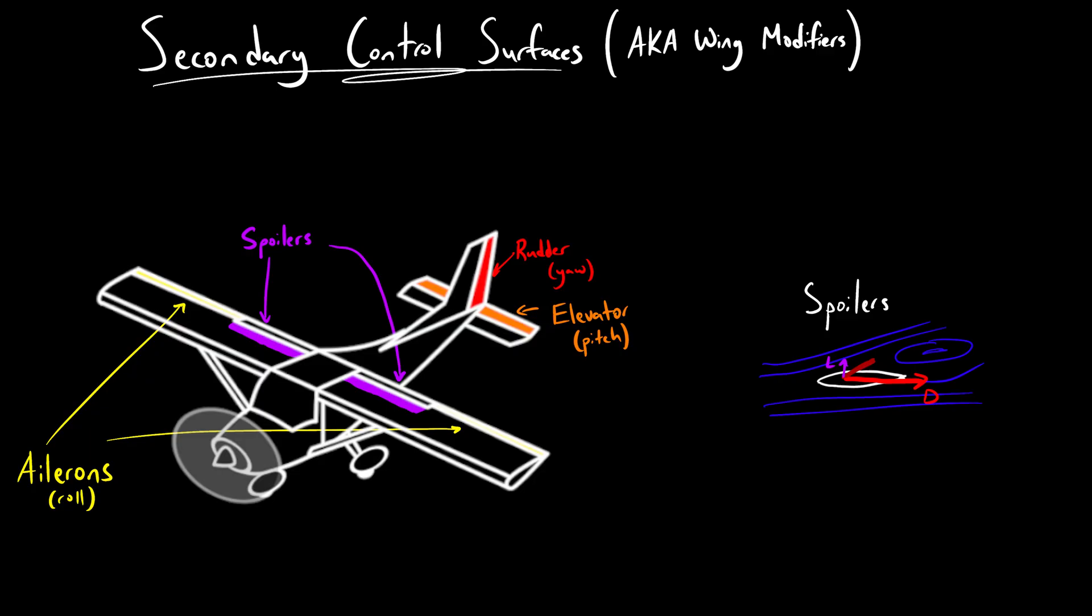There are two main types of spoilers. Those which are used in mid-air to increase the descent rate, and these can also act as ailerons. And those which are used on landing to transfer weight of the aircraft from the wings to the wheels to allow for more braking.